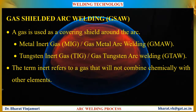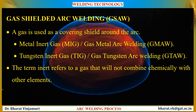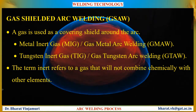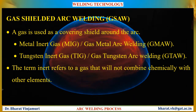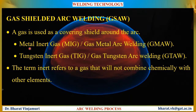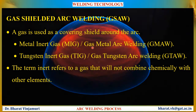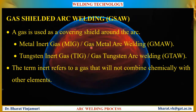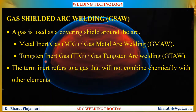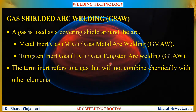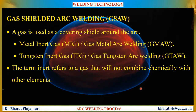The gases used are inert gases — gases which will not combine with any other elements. There are two types of gas shielded arc welding process. One is metal inert gas welding, popularly called as MIG welding, and the second one is called as tungsten inert gas welding process. Let us understand how these two processes work.